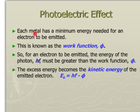Each metal has a minimum energy needed for an electron to be emitted or to be given off. And this minimum amount is called the work function phi of that metal. So for an electron to be given off, the energy of the photon Hf must be greater than the work function phi. And the excess energy becomes the kinetic energy of the emitted electron.